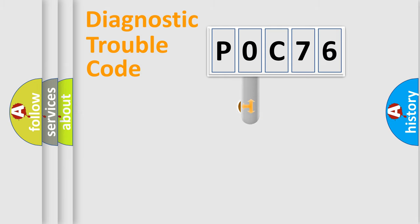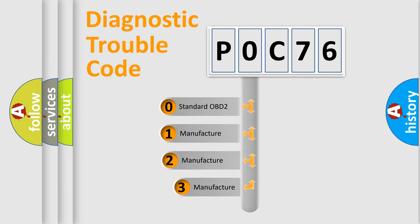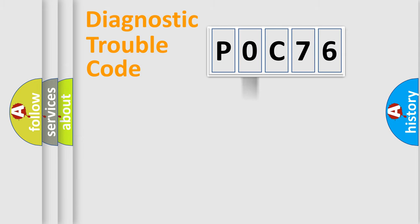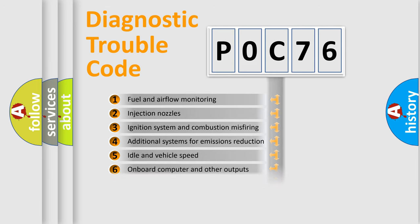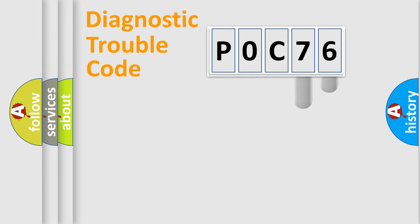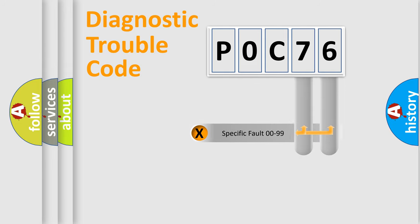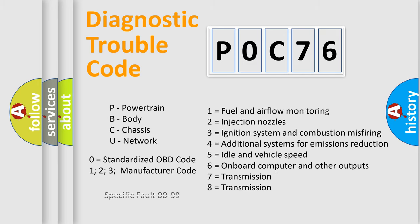This distribution is defined in the first character of the code. If the second character is expressed as zero, it is a standardized error. In the case of numbers 1, 2, or 3, it is a more manufacturer-specific expression of a car-specific error. The third character specifies a subset of errors. The distribution shown is valid only for the standardized DTC code. Only the last two characters define the specific fault of the group — but this division is valid only if the second character is expressed by the number zero.